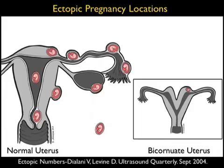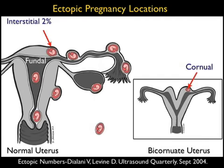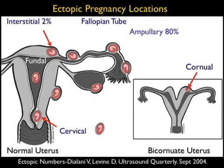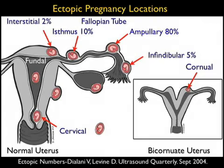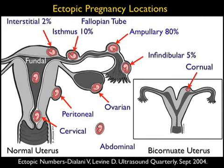Let's begin our discussion of ectopic pregnancies by reviewing the locations where they're commonly found. We see a normal uterus to the left and a bicorneate uterus to the right. A fundal location is the definition of an intrauterine pregnancy as shown in the normal uterus. However, we can have variants of ectopic pregnancies within the uterus — in the interstitial location in the normal uterus, and in the corneal region in the bicorneate uterus. We can also have implantations low within the cervical region. Most ectopic pregnancies will be located within the fallopian tube, and of those the majority will be found in the ampullary region, though we can have implantations more proximal within the ismal region or distal within the infundibular region. Tougher ectopic topics to diagnose are those that implant within the ovary, the abdominal cavity, or the peritoneal lining — these can be very hard to diagnose and commonly grow to an advanced stage before diagnosis.